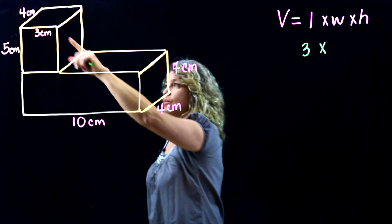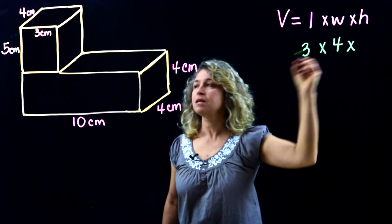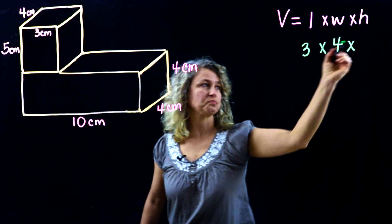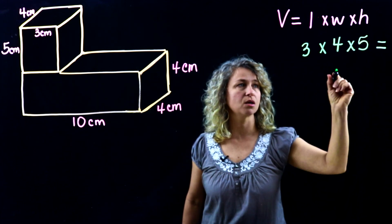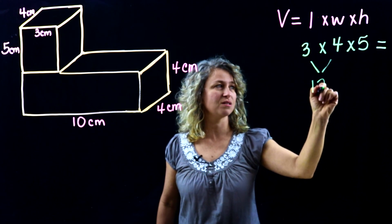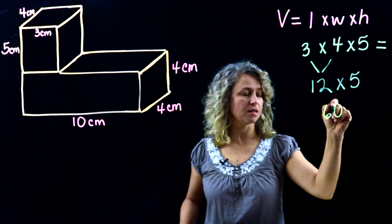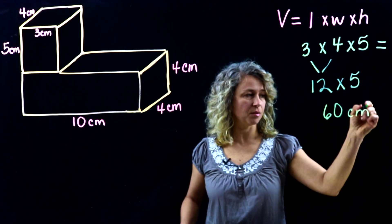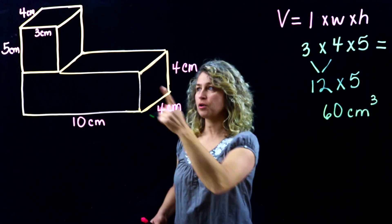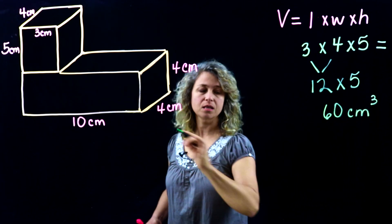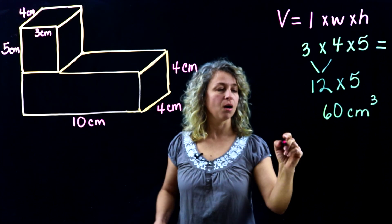We multiply the length of three times the width of four, and the height is five. So three times four is twelve, and twelve times five is sixty. Since the units are centimeters, this is 60 centimeters cubed — the volume for the first shape.